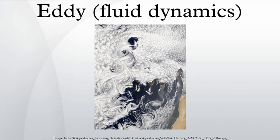In fluid dynamics, an eddy is the swelling of a fluid and the reverse current created when the fluid flows past an obstacle. The moving fluid creates a space devoid of downstream flowing fluid on the downstream side of the object. Fluid behind the obstacle flows into the void creating a swirl of fluid on each edge of the obstacle, followed by a short reverse flow of fluid behind the obstacle flowing upstream toward the back of the obstacle. This phenomenon is most visible behind large emergent rocks in swift flowing rivers.